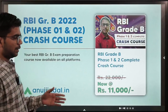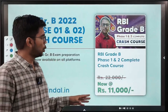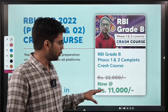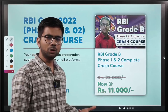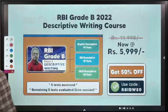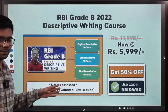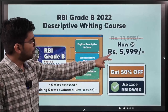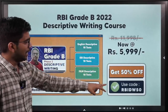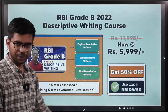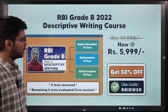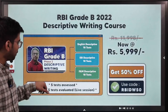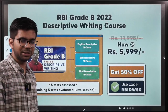Before that, we are offering a crash course of Phase 1 and Phase 2 complete, currently available at a very discounted price of Rs. 11,000. You can go through the details from our website. We have also launched another course for descriptive writing exclusively for Phase 2, available at a discounted price of Rs. 5,999 if you use the code RBIDW50. In this you will get 10 English descriptive tests, 10 ESI and 10 FM descriptive tests. Five tests will be assessed and remaining five will be evaluated through live sessions by Anuj sir himself.